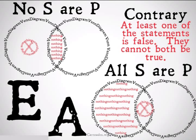The problem is they could both be false. So the denial of either statement doesn't actually tell us anything about the other statement. The affirmation of one statement allows us to deny the other, but the denial of either statement doesn't give us anything.